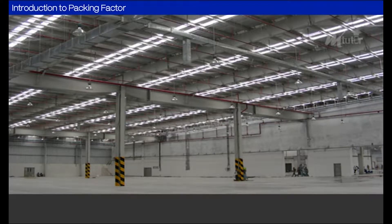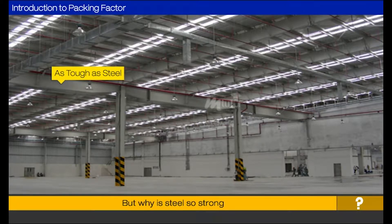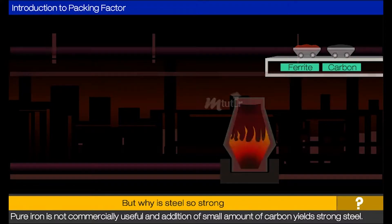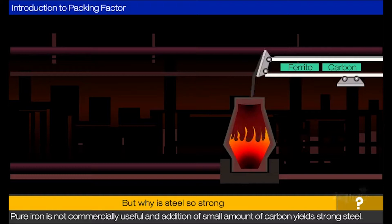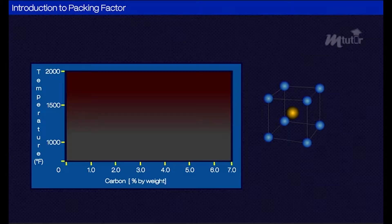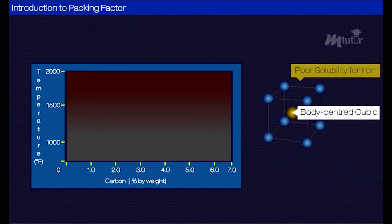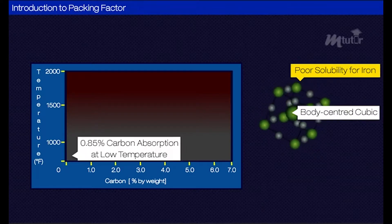We often describe very strong material as 'as tough as steel.' But why is steel so strong? Recall that in our previous session, we have seen that pure iron is not commercially useful, and addition of a small amount of carbon yields strong steel. Iron in its pure form is called ferrite and has a body-centered cubic structure with poor solubility of carbon.